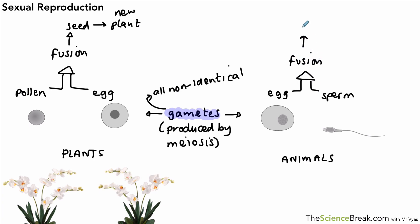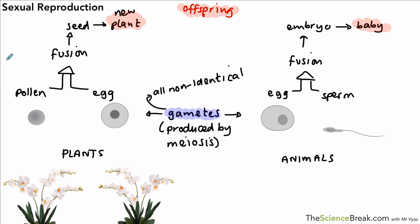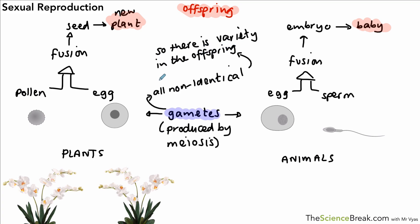In animals it's very similar: egg cells join with sperm cells through fusion or fertilization, producing an embryo that becomes a baby. We refer to new plants or babies as offspring. Because the gametes are non-identical, there will be variety in the characteristics of the offspring produced.